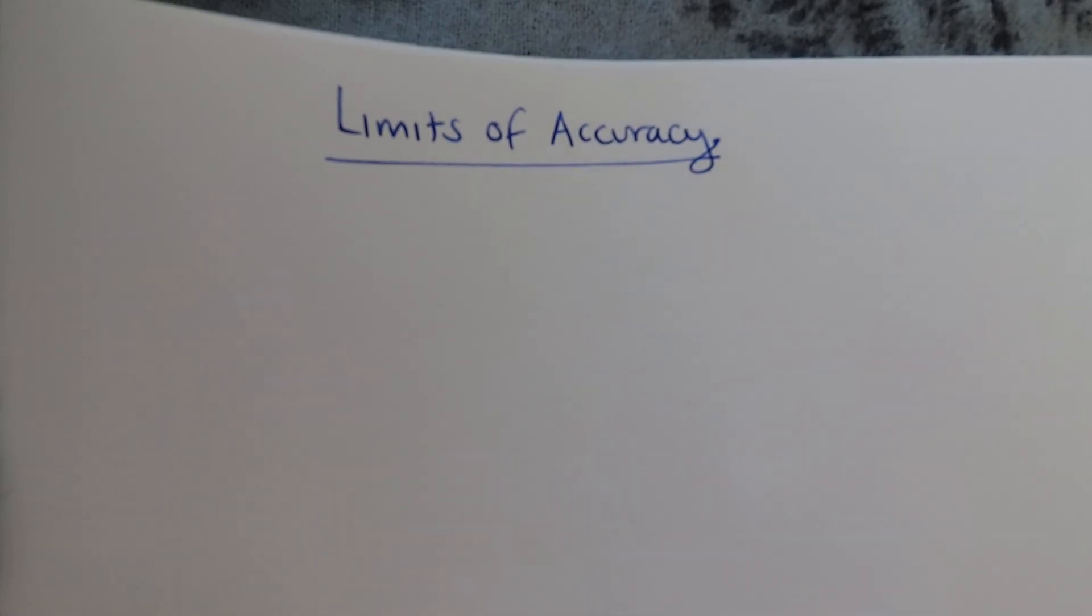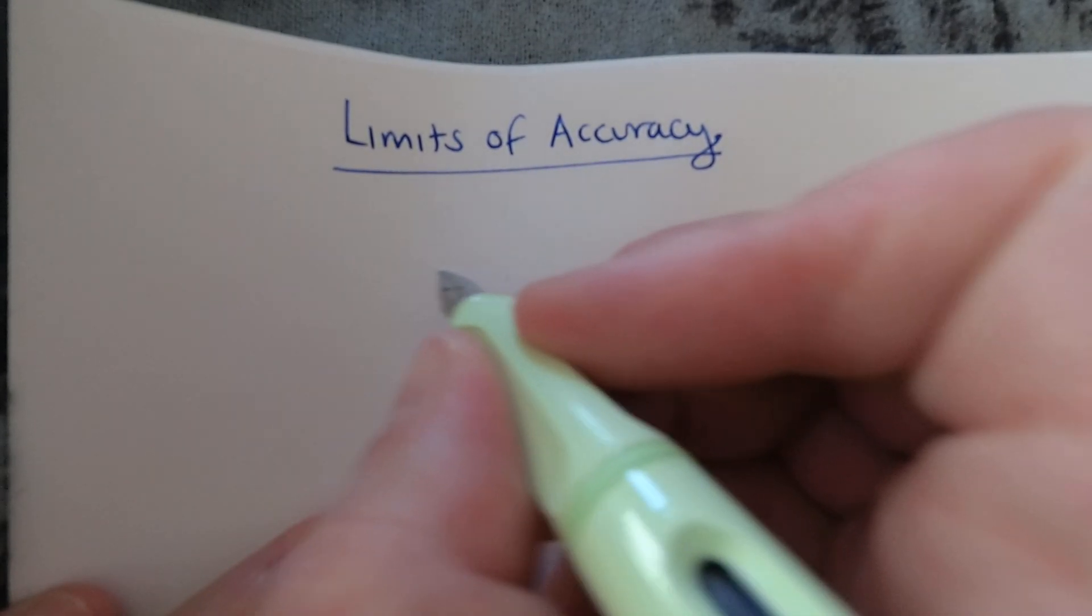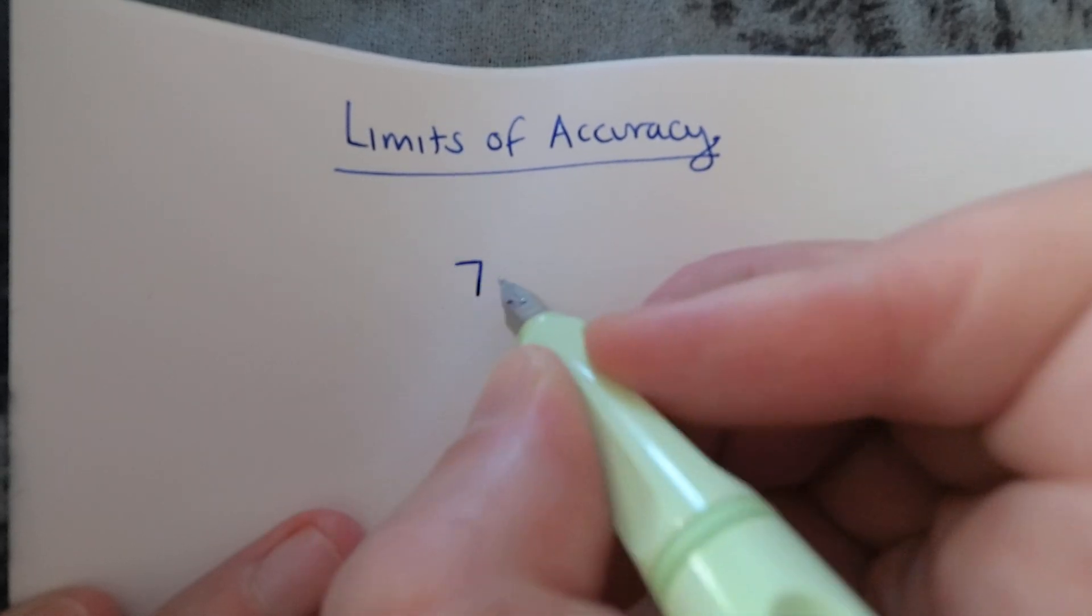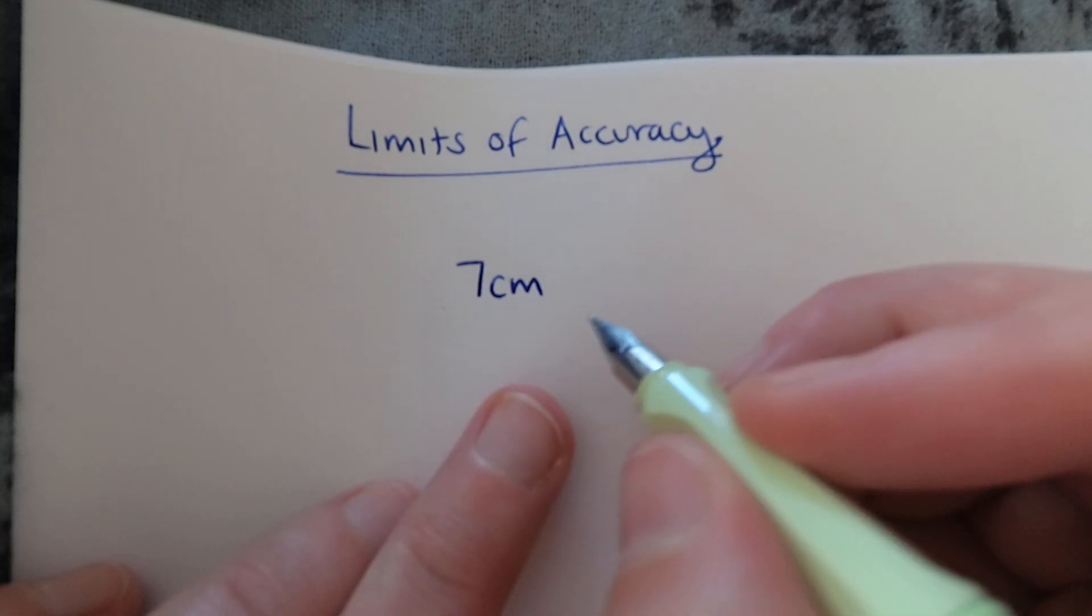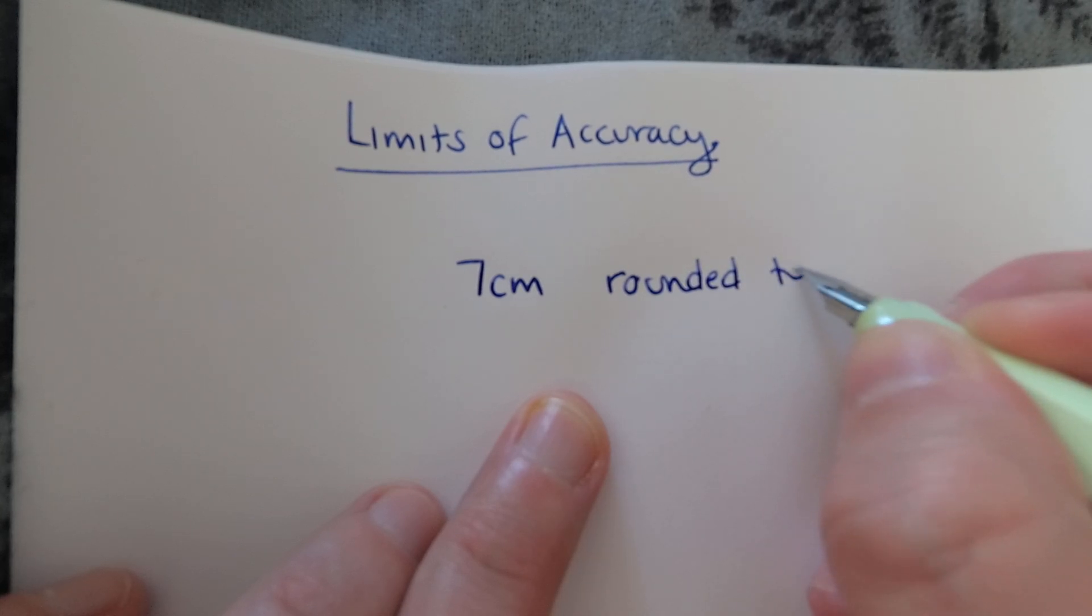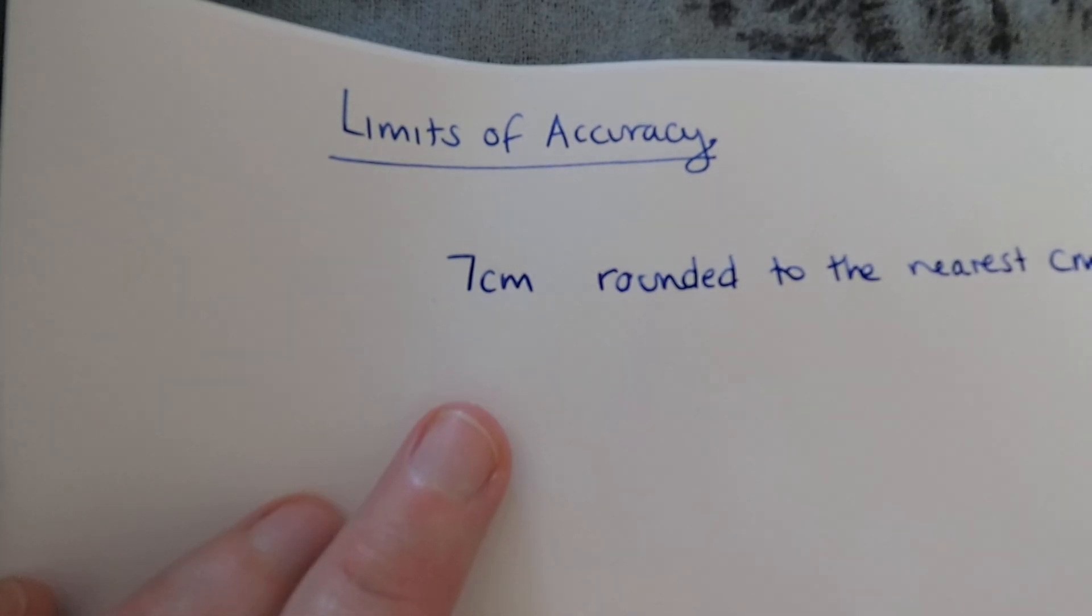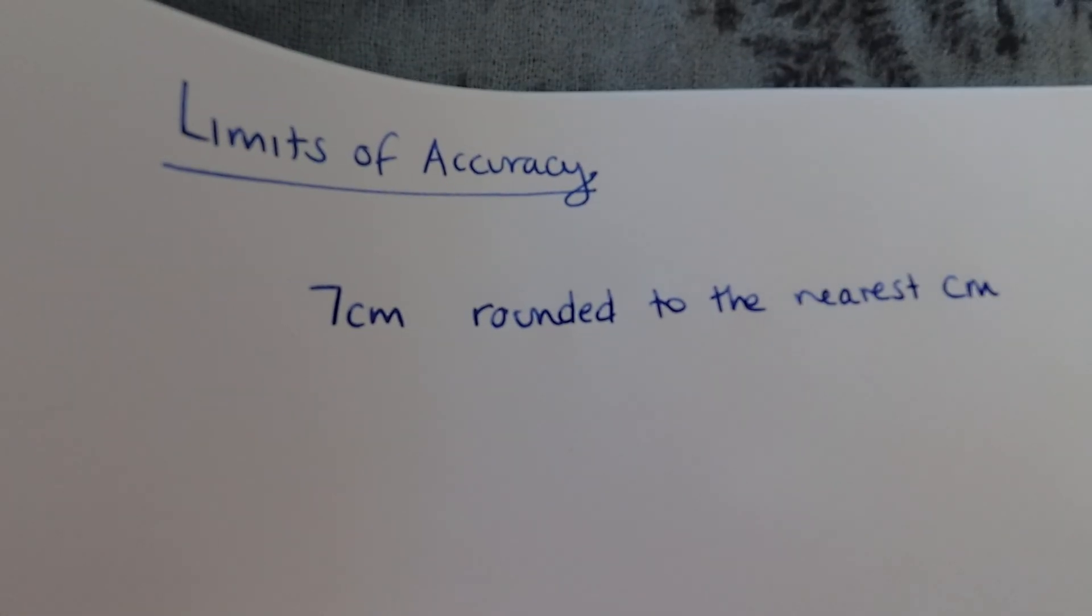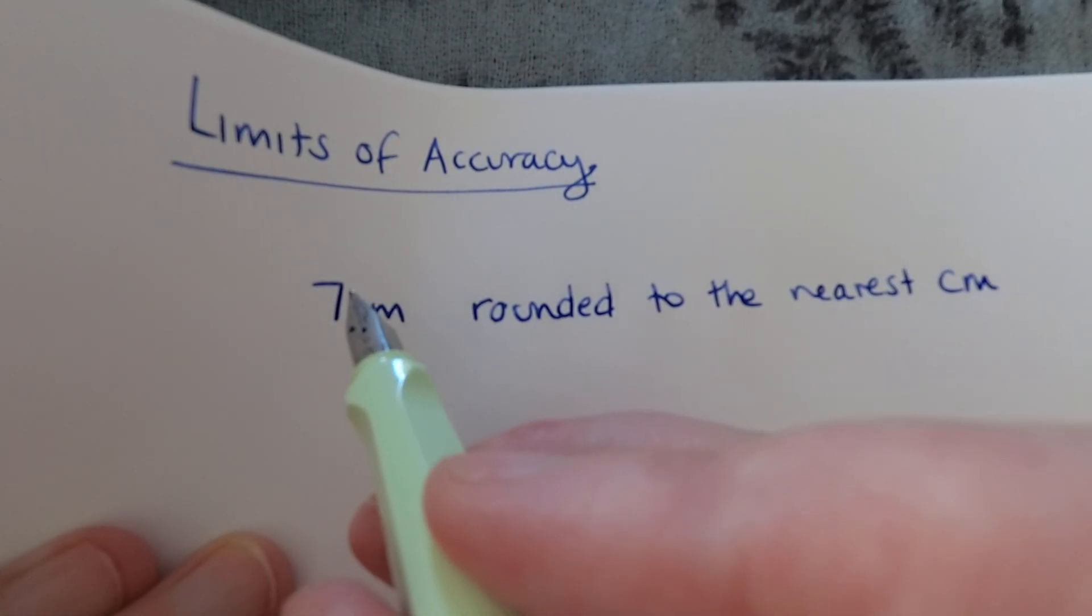If you start with an example, that's probably the easiest thing. I'm given the value of 7 centimeters and I'm told that that is a measurement someone's taken that has been rounded to the nearest centimeter, and I want to work out how accurate that might be.